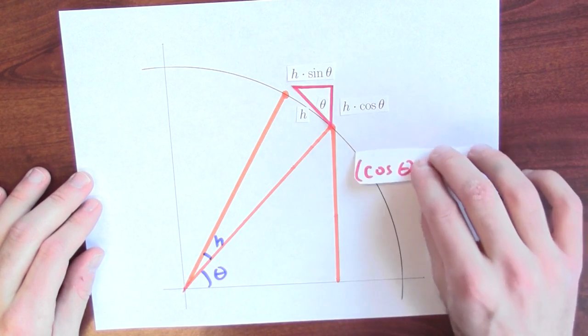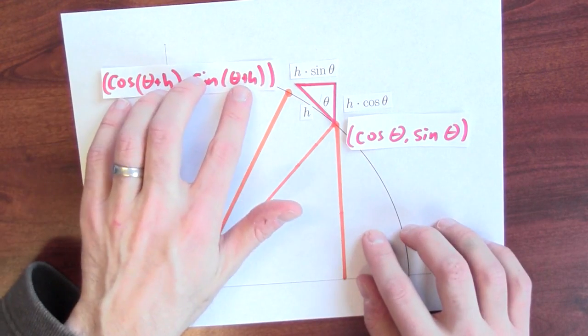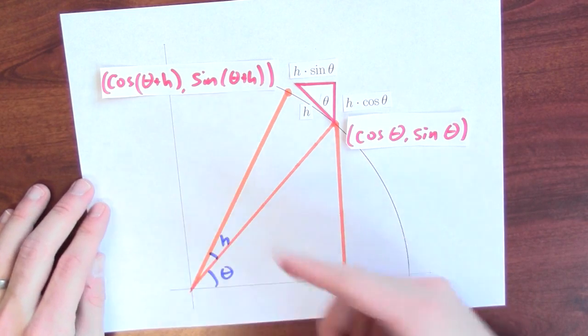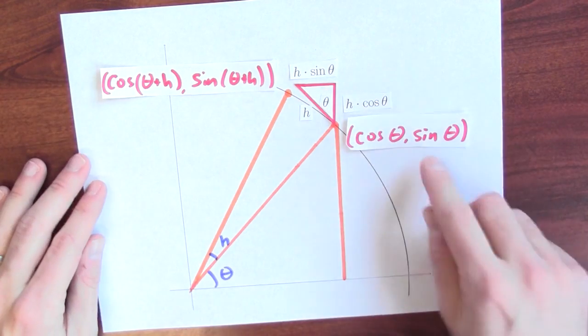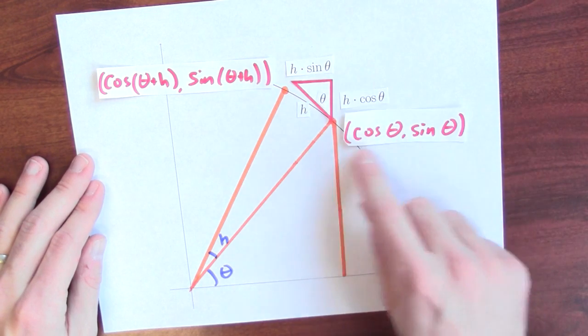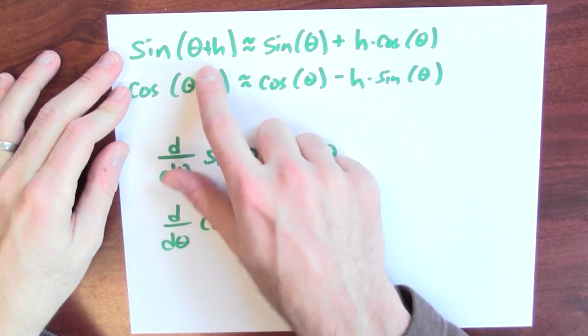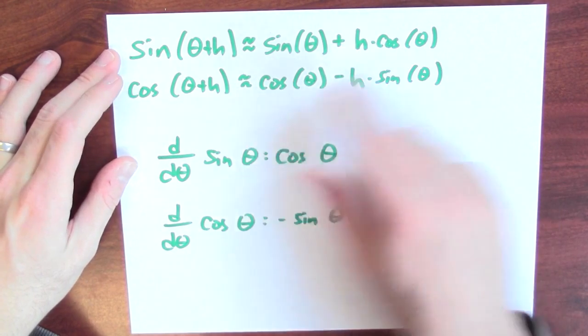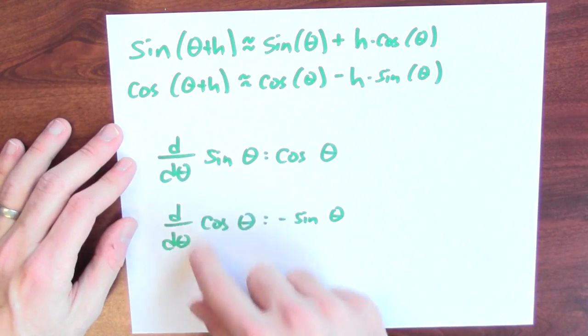So how much did wiggling from theta to theta plus h move the point around the circle? The original point from angle theta had coordinates cosine theta, sine theta. The new point, obtained by wiggling theta up to theta plus h, has coordinates cosine(theta+h), sine(theta+h). Using this little right triangle as the approximation, sine theta increased by about h cosine theta, and cosine theta decreased by about h sine theta. We're now in a position to make a claim about the derivative.